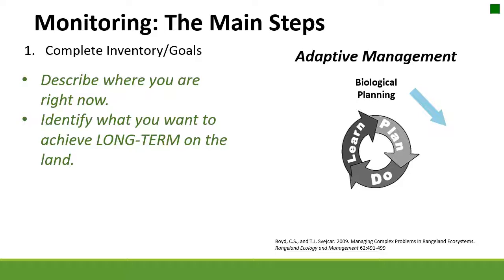We want to know where we are right now, which includes knowing what resources we have available — what vegetation is on the land, what structural resources exist. We then want to set goals and identify what we want to achieve long term. For example, sage-grouse is an interesting topic on rangelands right now. A goal could be to increase sage-grouse populations, or to maintain or improve sage-grouse habitat. Both relate to sage-grouse but can have very different implementation processes.